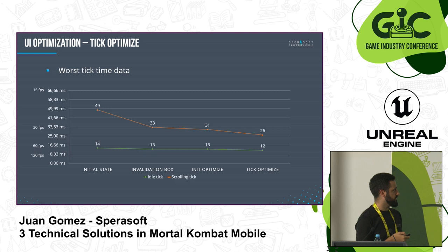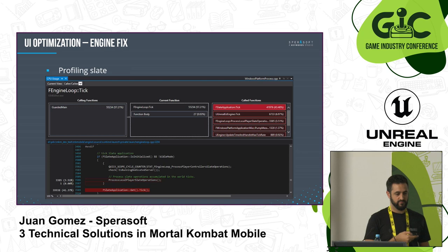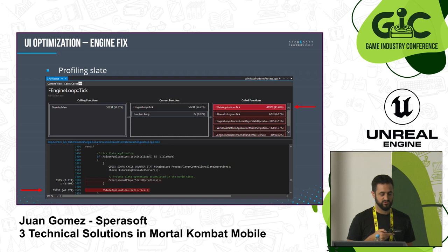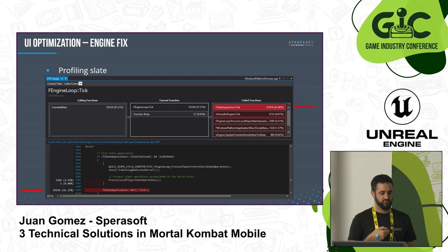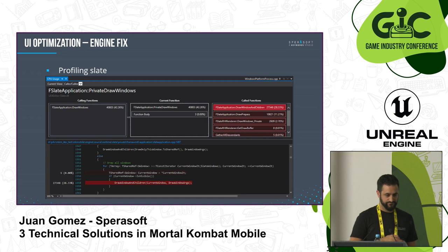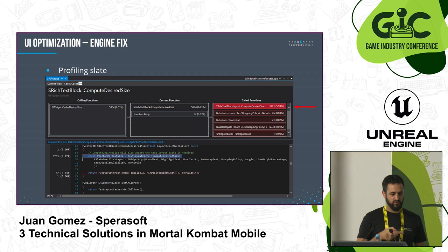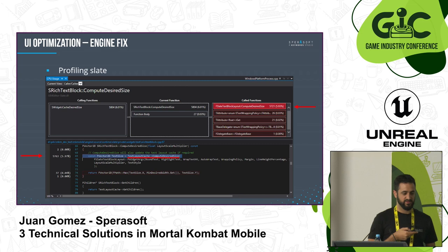We actually have a tick from Slate itself, which is very time consuming — much more time consuming than anything we've optimized so far, because we were just optimizing small things in our code. You can actually go and profile the engine to see what's going on. Maybe there is a problem in the engine, or maybe you are using things in some wrong way, or you can figure out better ways to use the engine. We start going deeper: we have this tick and we see we're doing drawing and the prepass — that's taking quite a lot of time. Going deeper, we see we are calculating layout size for text, which is taking a lot of time.